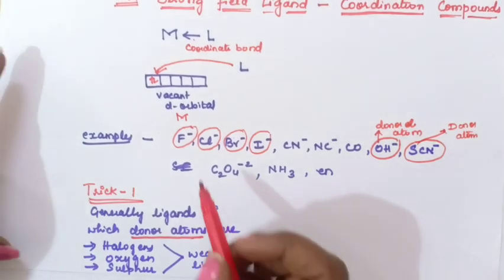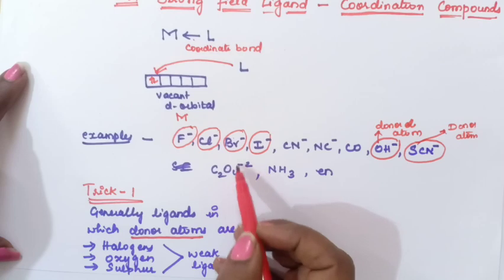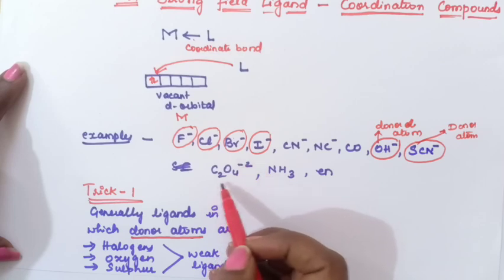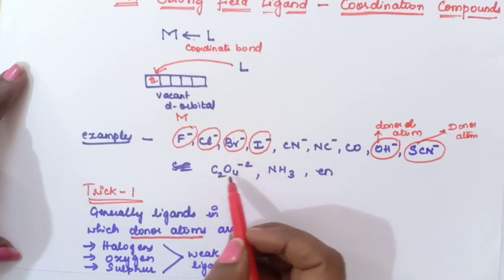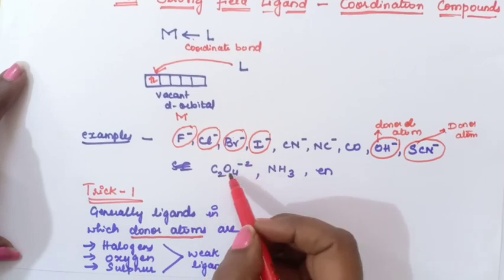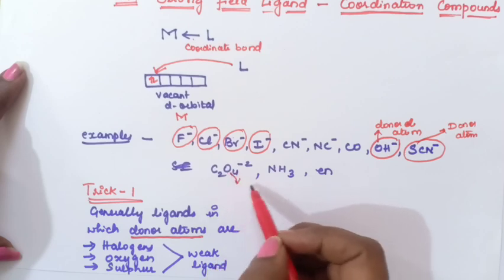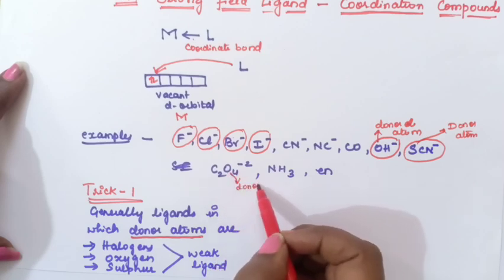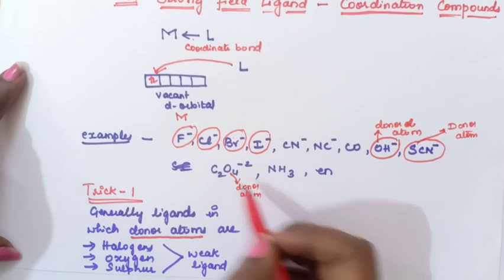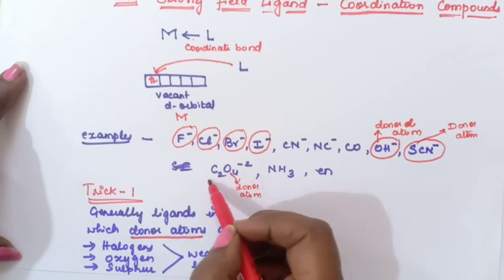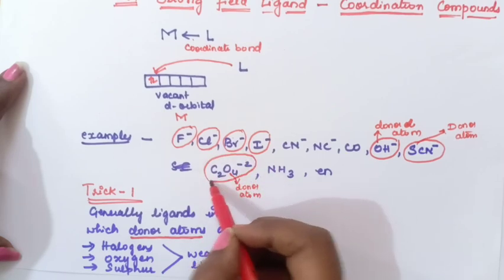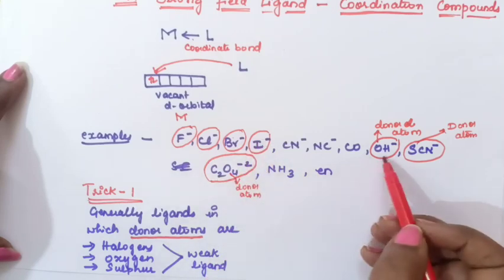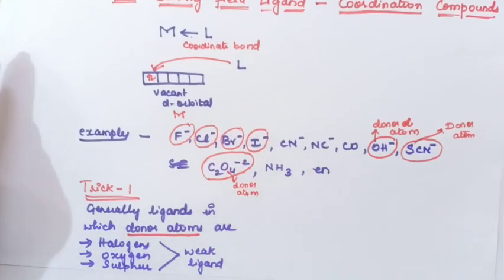For C₂O₄²⁻, if you look at which atom is the donor atom, oxygen is the donor atom here. So C₂O₄²⁻ is also a weak field ligand. We are rounding off all weak field ligands with the red color pen.